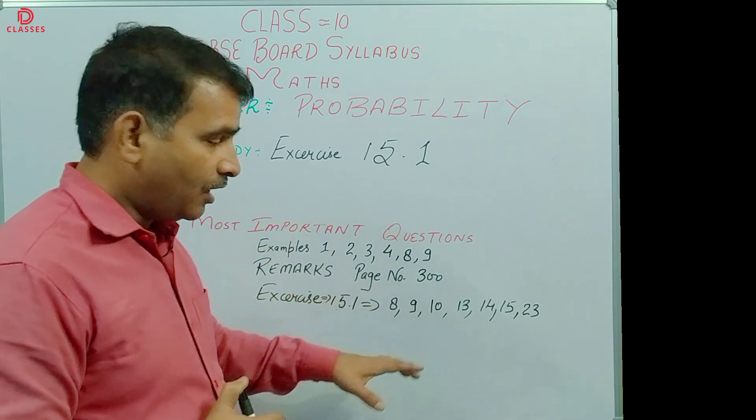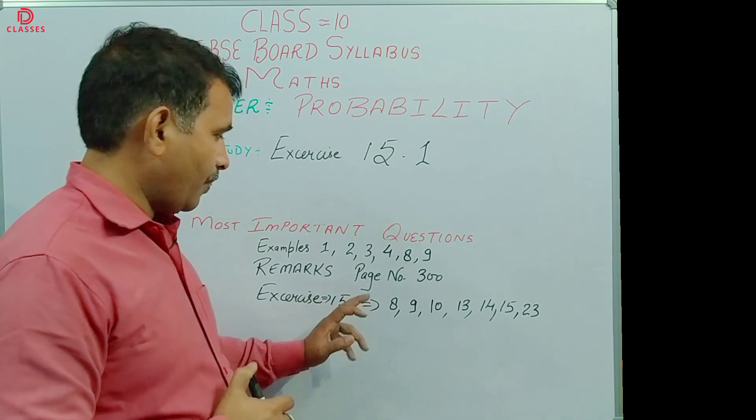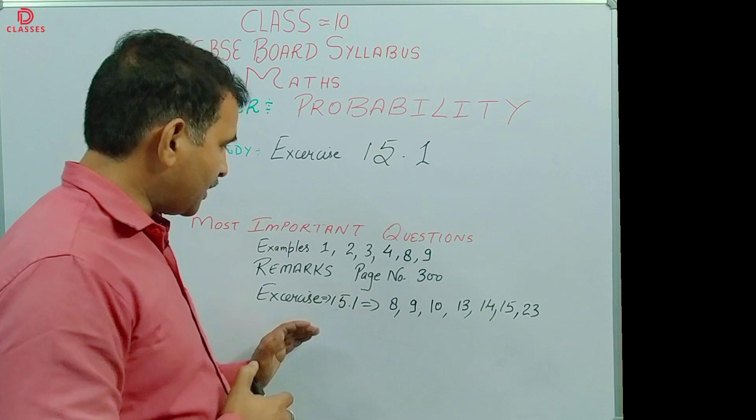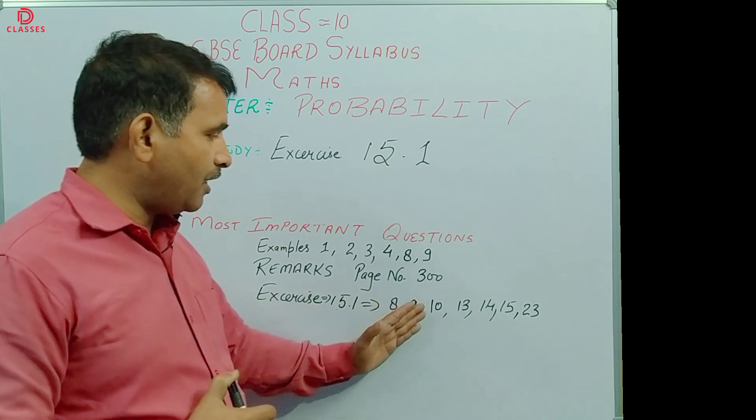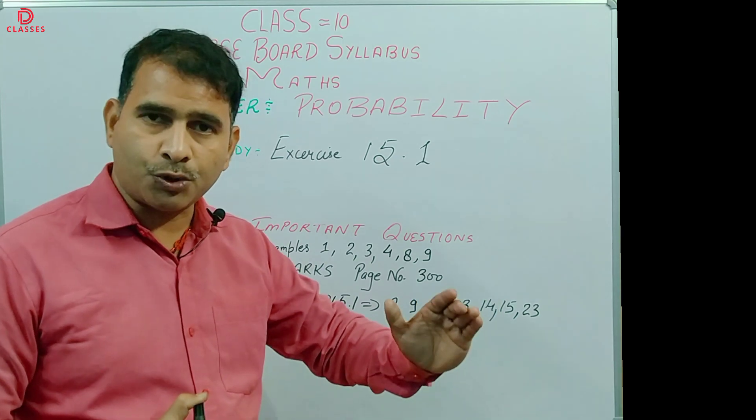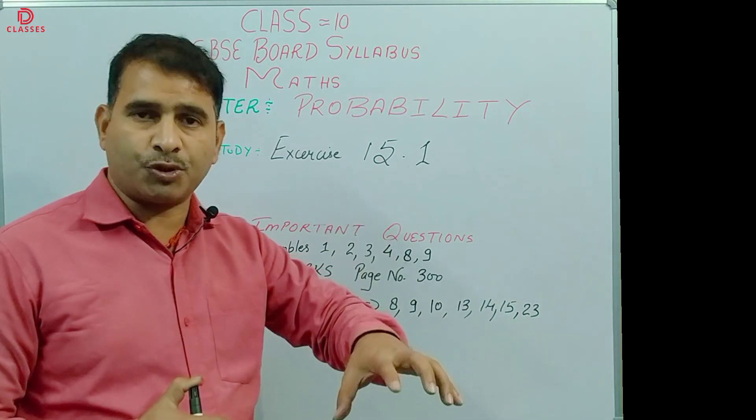Remarks on page number 300, and examples 1, 2, 3, 4, 8, 9. Exercise page number 301: questions 3, 9, 10, 13, 14, 15, and 23 - you need to solve and memorize these questions so as to score 95 percent and above.